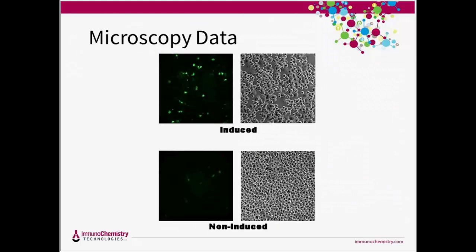We'll wrap up our data discussion with one more example of microscopy data. THP-1 cells were treated with either a negative control (non-induced) or PMA to induce differentiation into macrophages. After 48 hours, PMA was removed from the induced population and replaced with fresh medium containing LPS to induce caspase-1 activation. Cells were stained with FAM-YVAD-FMK, washed, and examined with a microscope. In the treated samples, many cells appear bright green indicating increased caspase-1 activity, while in the non-induced sample, few green cells are visible, indicating a low level of caspase-1 activity.